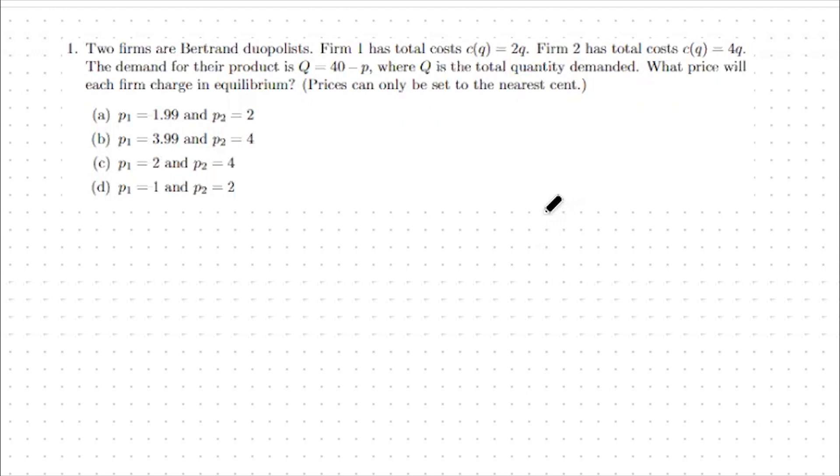Whichever firm has the lower marginal cost will be able to undercut the other firm and sell at a price that's lower than the marginal cost of the other firm. This means that the firm with the higher marginal cost will be priced out of the market. Let's take a look at this specific example.